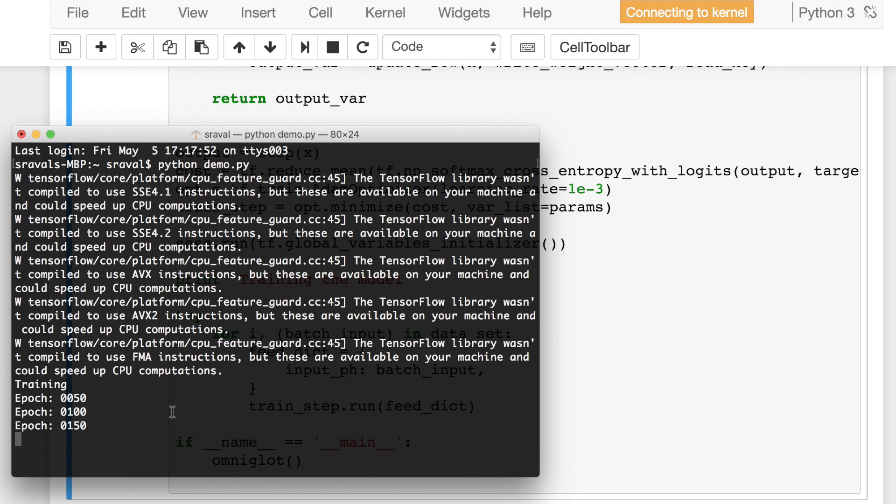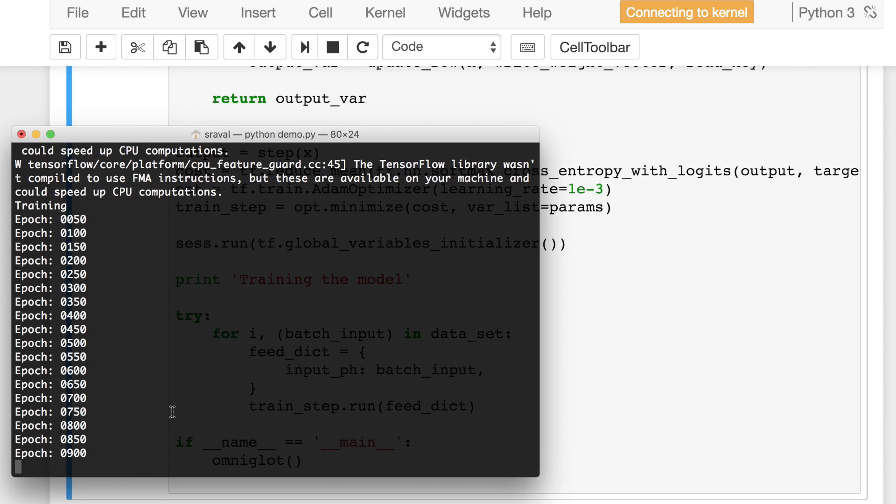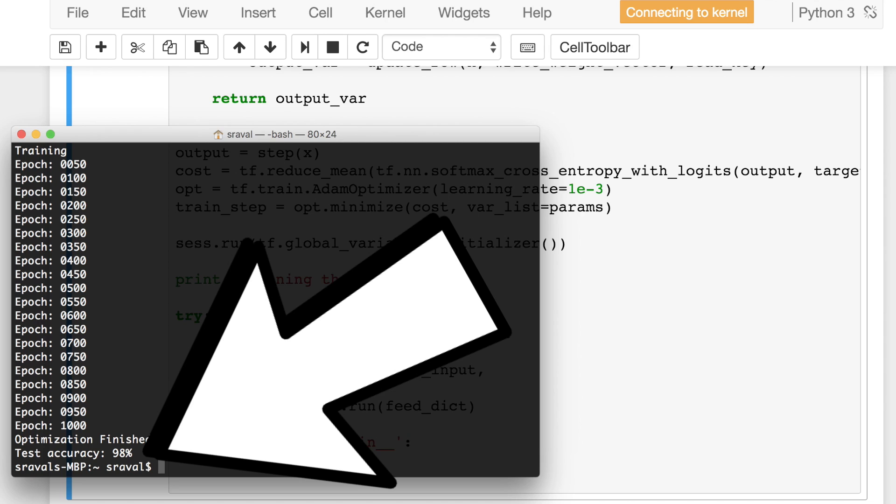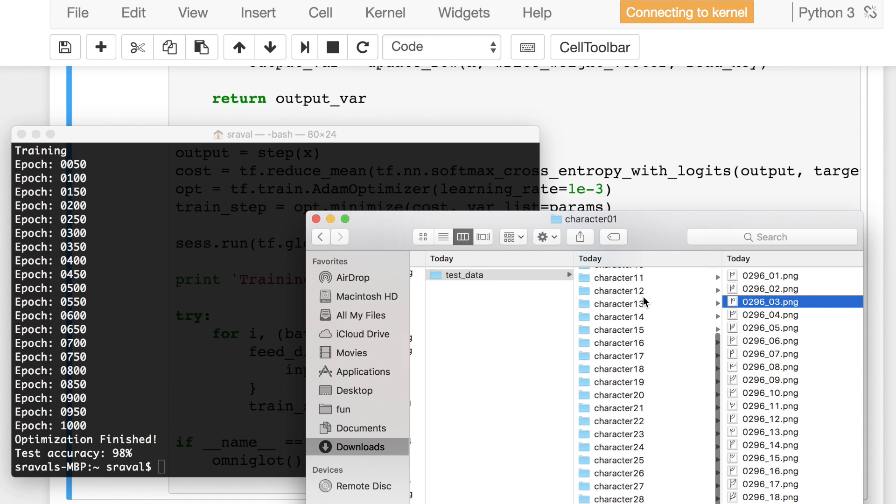After training, we can test it out on some different recognizable characters and notice how the accuracy is surprisingly good. Normally training time would take a lot longer for similar results. These results are very promising for one-shot learning.